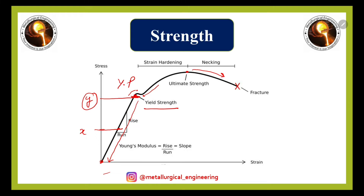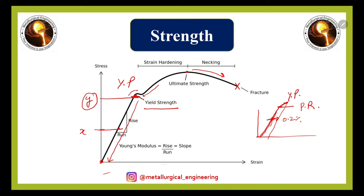The yield point is where the material shows a straight-line response up to a certain point, which is known as the proof resilience point. A little ahead of this proof resilience point is the yield point. The yield point is considered to be 0.2 percent offset from the straight line. After this yield point, the material starts dipping — this is the yield point phenomenon. This will be discussed in more detail in upcoming videos about the tensile behavior of materials.